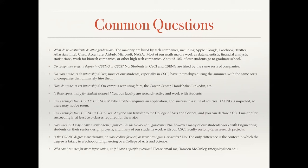Here are some common questions. What do our students do after graduation? The majority of our students are hired by local tech companies, which include Apple, Google, Facebook, Twitter, Atlassian, Intel, Cisco, Accenture, Airbnb, Microsoft, NASA — just about any company you've heard of locally hires our students. Most of our math majors work as data scientists, financial analysts, or statisticians, work for biotech companies or other high-tech companies, and about 5 to 10 percent in any given year go on to graduate school to earn a master's degree or a PhD. Do companies prefer a degree in computer science and engineering or computer science in the College of Arts and Science? No, they don't. Students are both getting degrees in computer science. The context in which it's taken is irrelevant to people who are hiring. Both students get hired by the same sorts of companies.